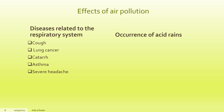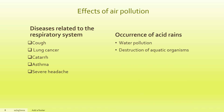Another harmful result of air pollution is the occurrence of acid rain. Due to acid rain, we may experience the following bad effects: water pollution, destruction of aquatic organisms, destruction of forests, and damage to soil.